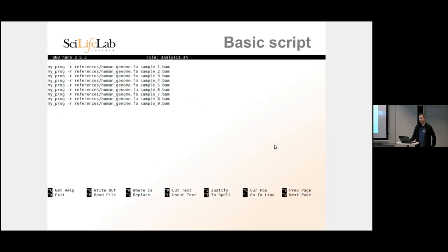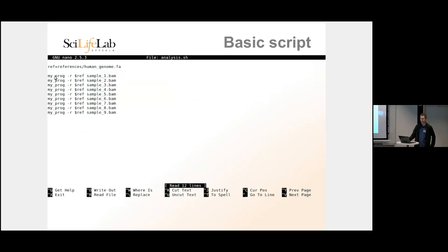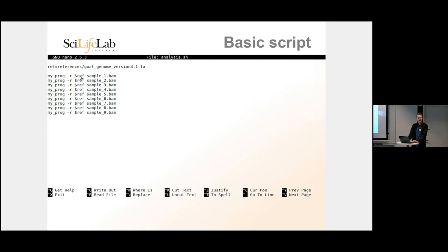The way we can use this is instead of typing the reference path over and over, we create a variable called ref up here — ref equals 'references/human_genome.fa' — and then on every single line we just type $ref. Now if we want to switch which genome we use, we change it in one single place. But we still have the unique file name part on every line, which we can't solve with one variable at the top.